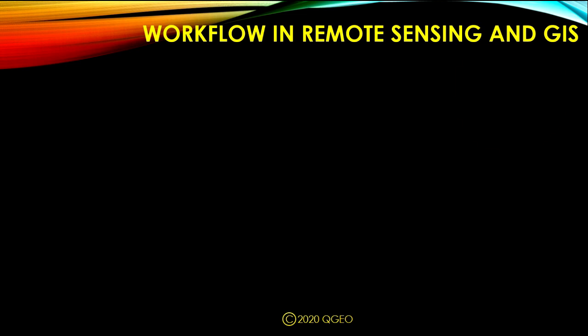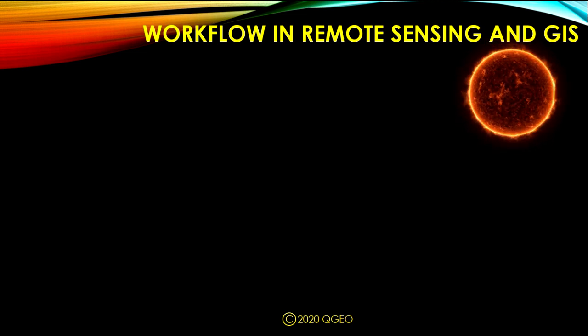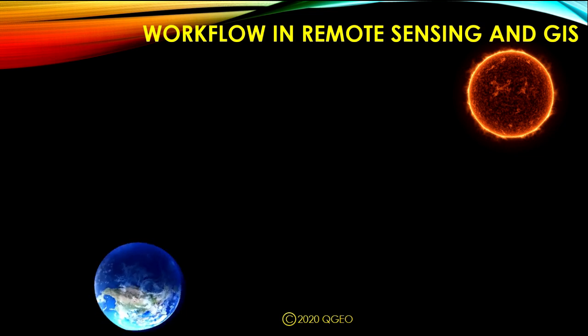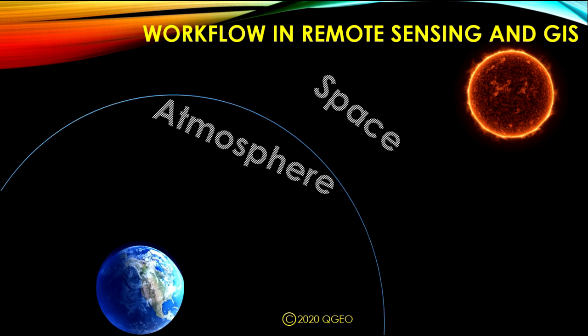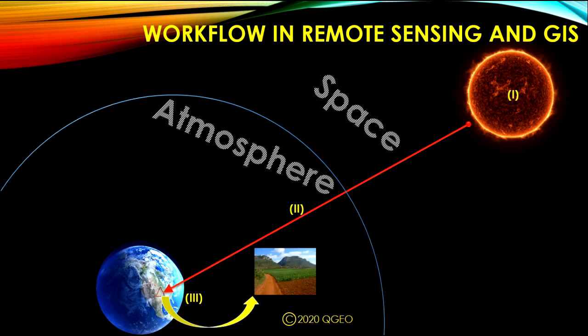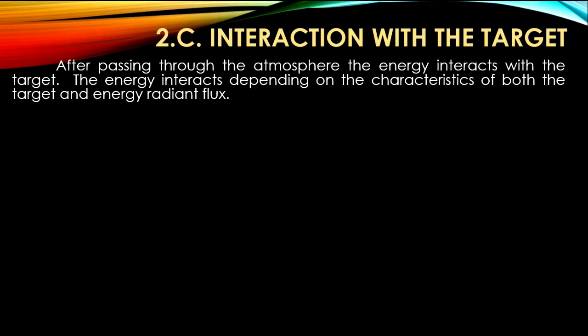In the workflow of remote sensing and GIS, after passing through the atmosphere, the energy interacts with the target. The energy interacts depending on the characteristics of both the target and the energy.